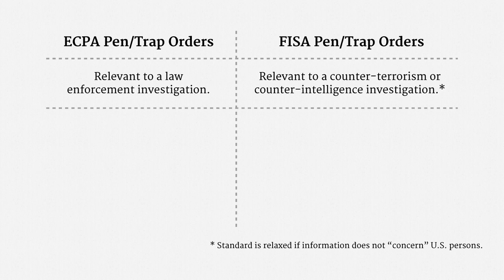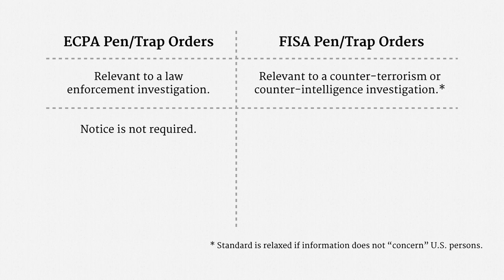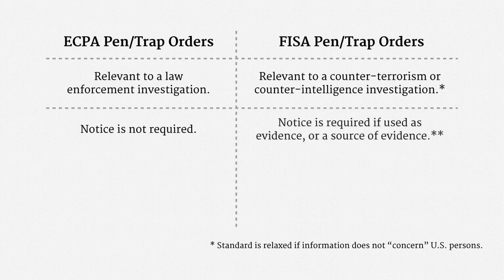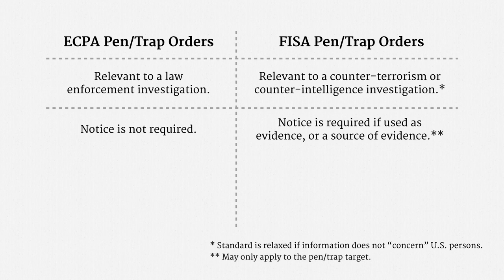On the ECPA side, a target doesn't need to be notified of a pen trap. If criminal charges are filed, prosecutors do usually disclose the use of a pen trap, but that isn't a statutory requirement. On the FISA side, notice is required for a pen trap if information from the pen trap is going to be used as evidence or as a source of evidence. That requirement may only apply to the pen trap target, though — the executive branch has taken that position in recent litigation.